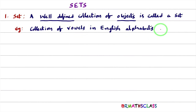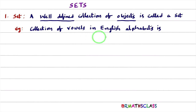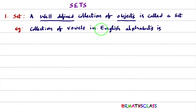Collection of vowels in the English alphabet — is it a set or not? Vowels in the English alphabet are well-defined. Everybody knows that A, E, I, O, U are the vowels in the English alphabet. So vowels in the English alphabet are well-defined, and therefore collection of vowels in the English alphabet is a set.